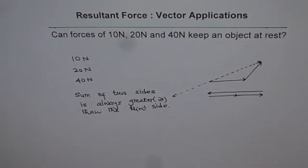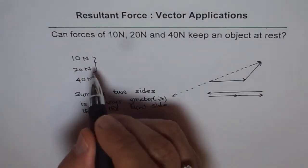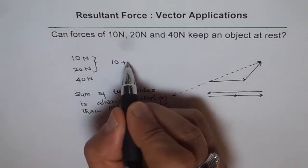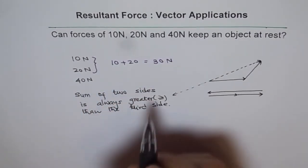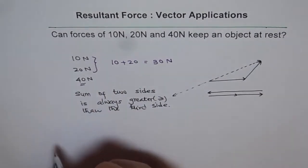Now if we check it, we will find these are the two sides. If you add them, what is 10 plus 20? It is 30. 30N,